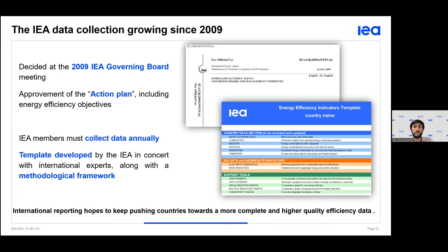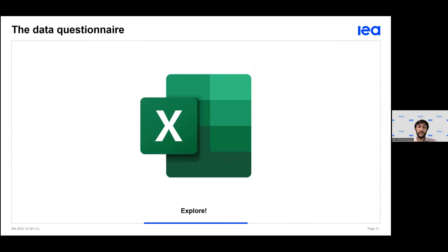The action plan approved at that meeting included objectives to promote energy efficiency. End-use data and statistics need to be collected annually by member countries to develop and track consumption patterns and efficiency indicators. The IEA, in concert with international experts, developed a questionnaire template based on a robust and harmonized methodology, including internal consistency and comparison checks performed with counterparts in the institutions providing the data.